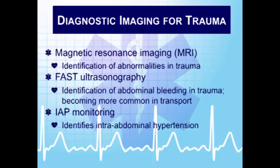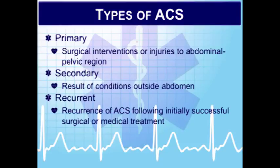FAST has largely replaced the diagnostic peritoneal lavage (DPL), though DPL is still done. It has decreased the need for laparotomy by providing a heads-up on whether the patient needs to go to the operating room immediately. Some pre-hospital systems have adopted FAST for identifying abdominal bleeding and trauma. There is also intra-abdominal pressure monitoring (IAP) — the abdomen can develop intra-abdominal hypertension leading to abdominal compartment syndrome (ACS), which can cause end organ damage and multi-system organ failure during critical illnesses and injuries.